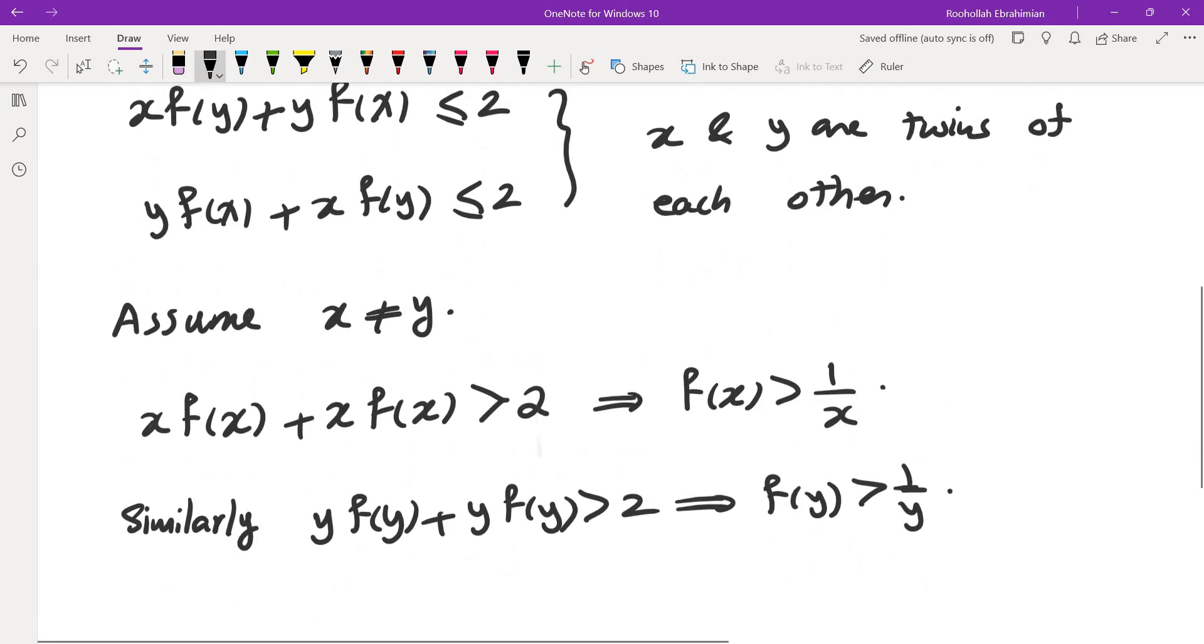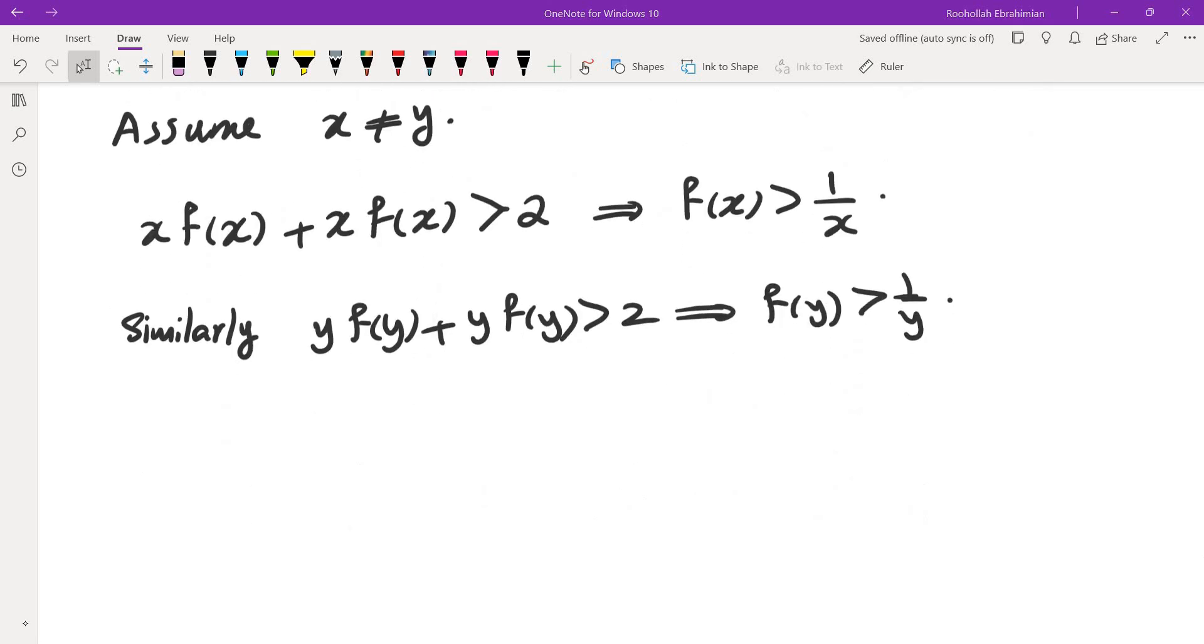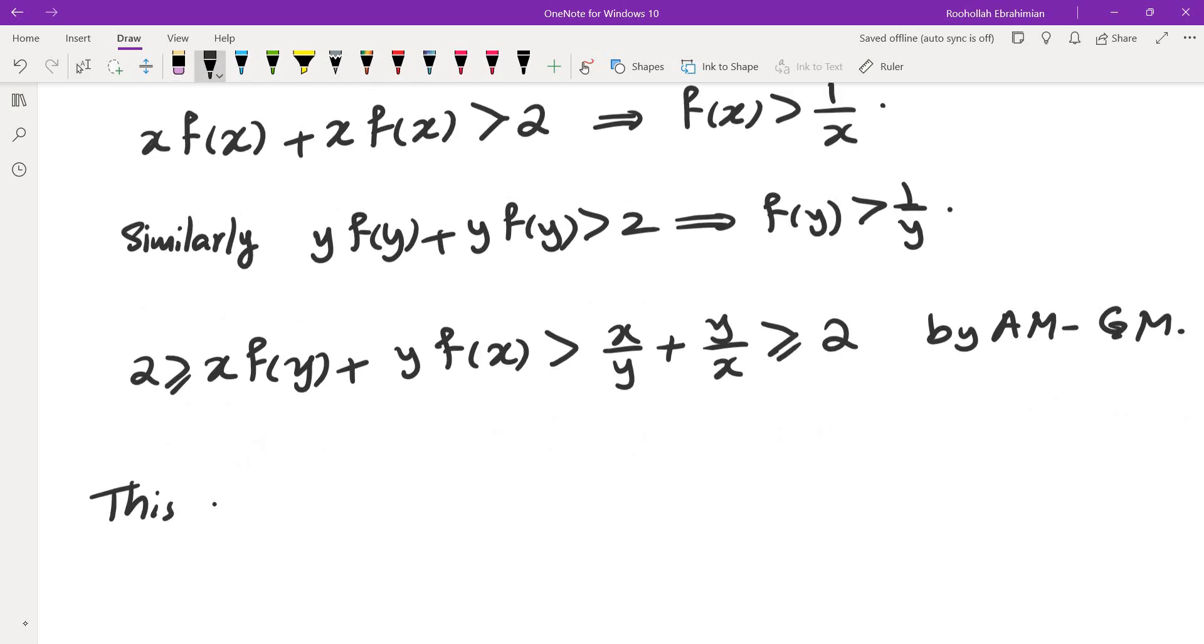So if that is the case, then I can take these and plug it back into the inequality that we had. We had 2 is greater than or equal to xf(y) plus yf(x), and f(y) is more than 1 over y, so this would be more than x over y. And f(x) is more than 1 over x, so that would be more than that. And this is greater than or equal to 2 by AM-GM, but that's a contradiction. So this is a contradiction.